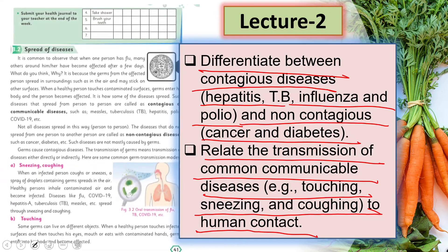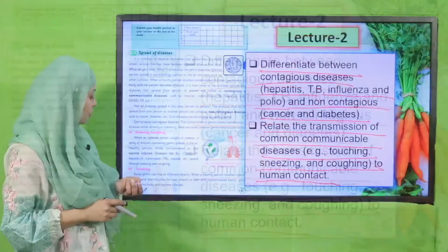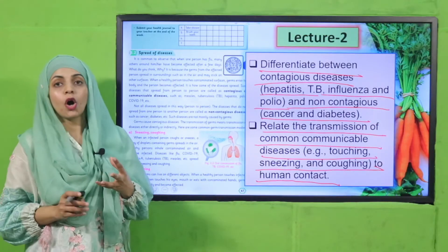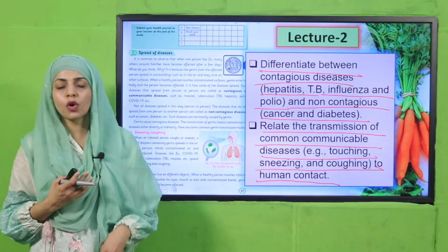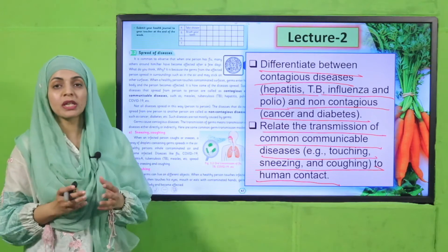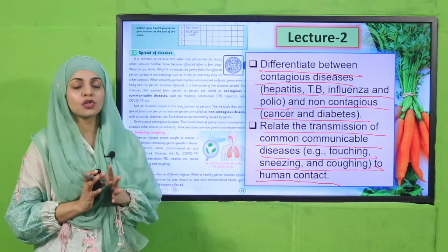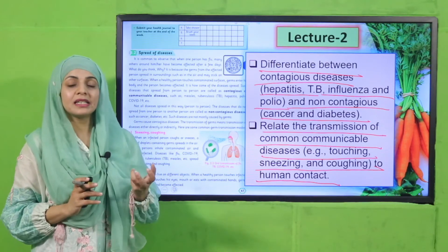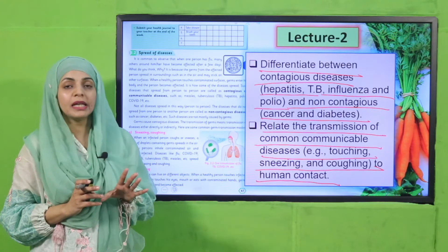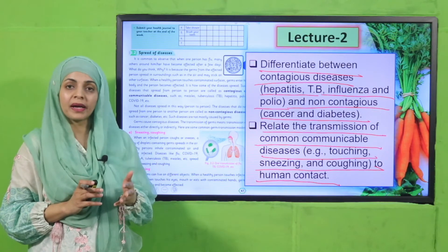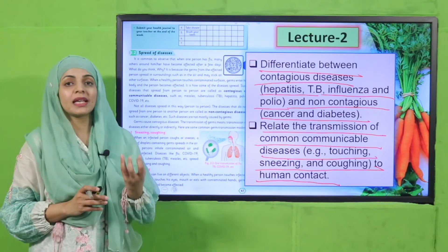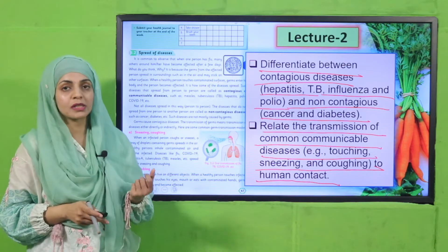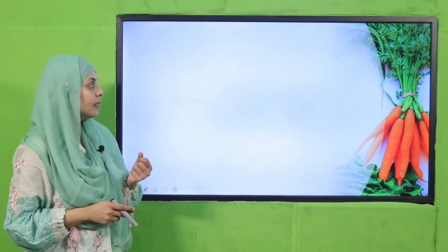In the second lecture, the page under reading is page number 41. We will study different illnesses we have already read about, and then we will learn about contagious and non-contagious diseases — illnesses that spread and those that do not — and how different germs are transmitted.